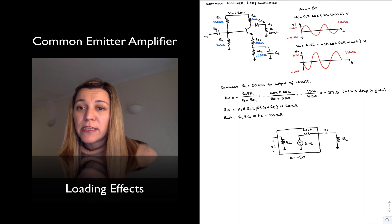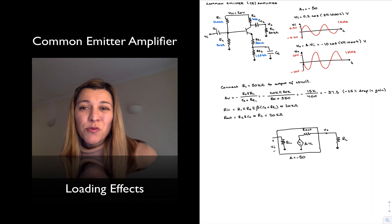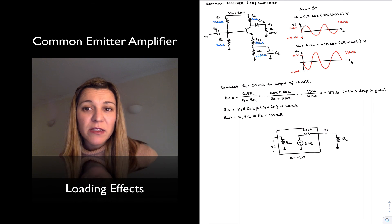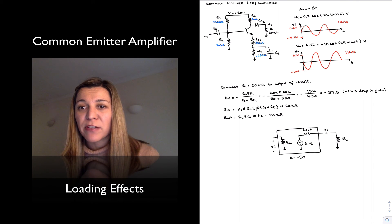it's a voltage amplifier, it is inverting, it's pretty good with regards to gain, input resistance could be higher. But typically, if we can make it in the range of tens of kilo ohms, that's not too bad. Output resistance, typically in the range of kilo ohms, it's pretty high. So something that we definitely want to improve.